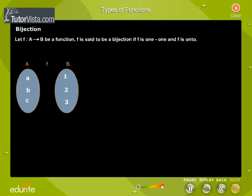Bijection. Let f: A → B be a function. f is said to be a bijection if f is both one-to-one and onto. In the given example, click on a and click on 1, click on b and click on 2, c and 3.